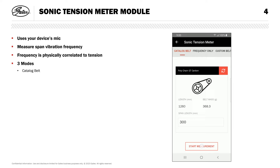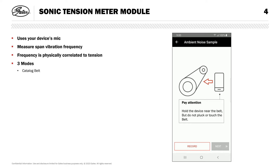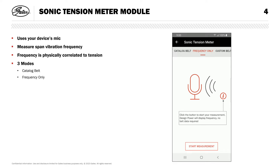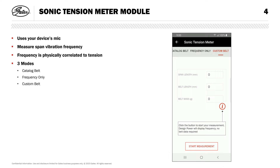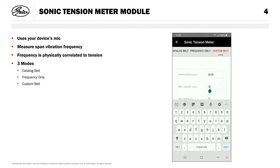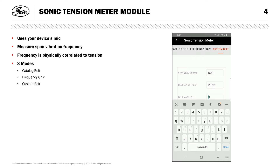Then tap start measurement. I want to highlight the two other modes first. Our second mode is frequency only. This mode requires no specific inputs and is useful when you have a drive design with a tension spec in frequency units. Our third mode is custom belt. This is similar to our catalog belt mode, but allows you to measure and input the physical parameters. You'll need to know the length of the belt span you're measuring, the length of the belt, and the belt's mass. Then hit start measurement.